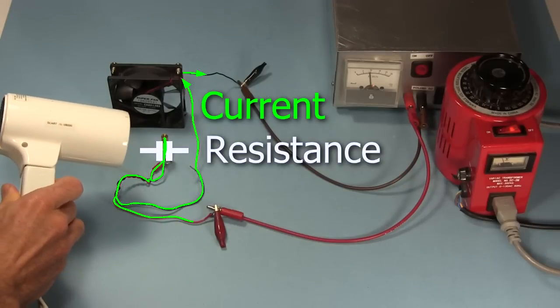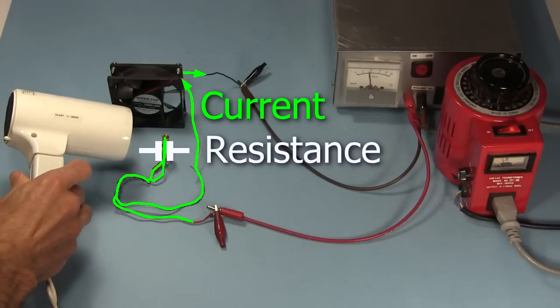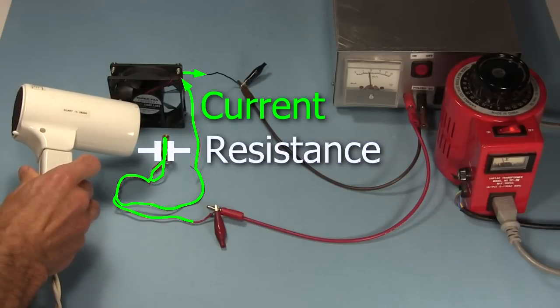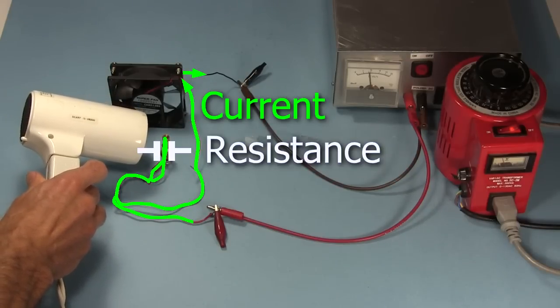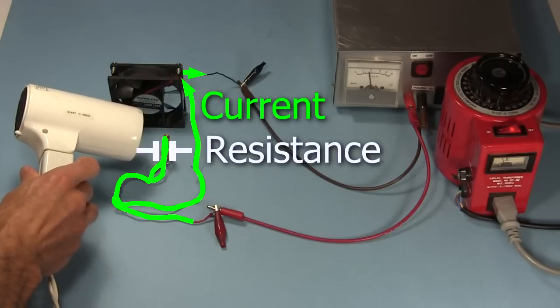Now I use this hair dryer to heat up the thermistor. That causes the thermistor's resistance to decrease. As it decreases, the current increases. And when the current's high enough, the fan starts spinning.